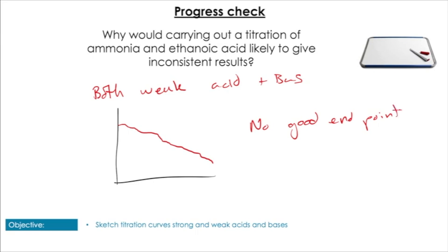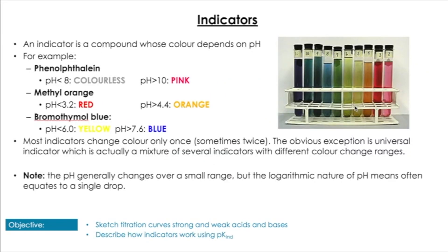Now let's look at how indicators fit in. Indicators change color depending on pH — above or below certain values they show different colors. They usually change once. Universal indicator is a combination of multiple indicators. Importantly, because of the logarithmic nature of pH (pH 1 being 10 times stronger than pH 2), one drop usually causes a large enough change to switch the indicator from one color to another.